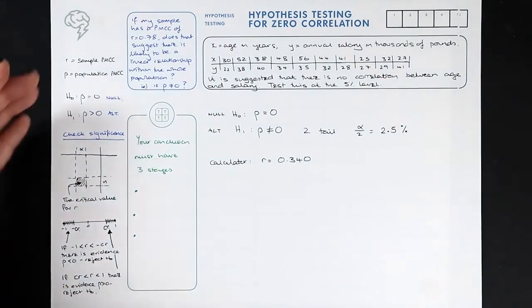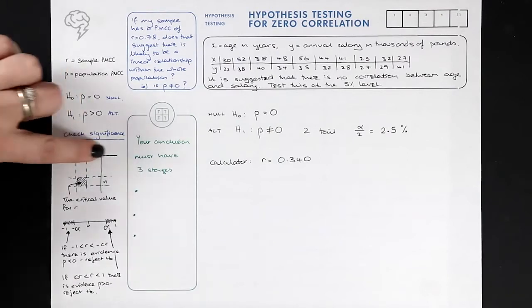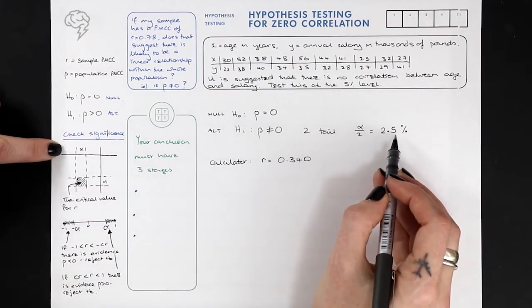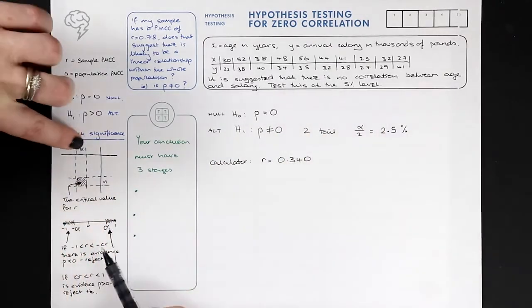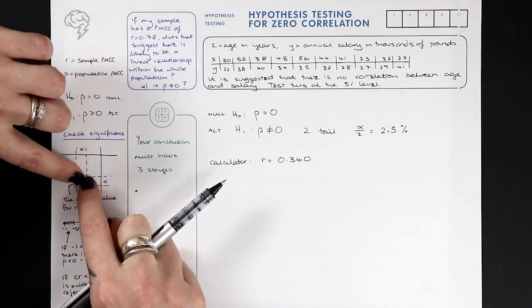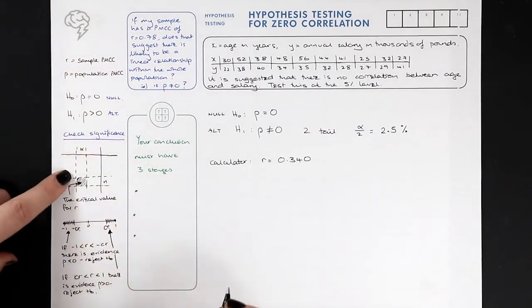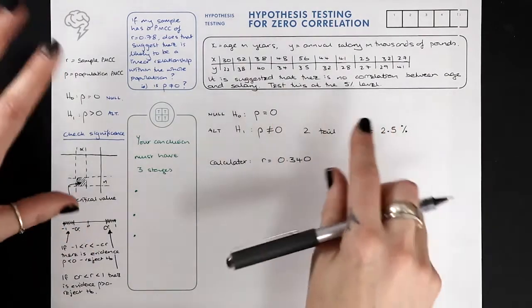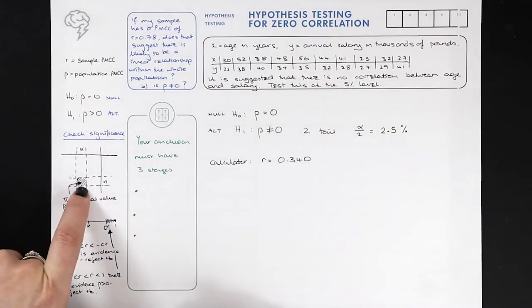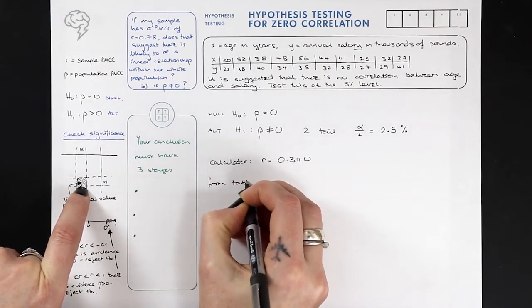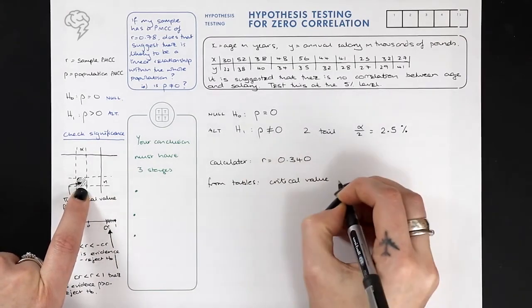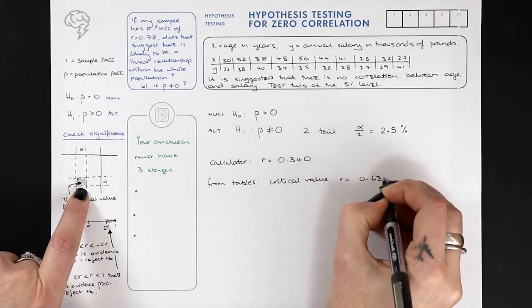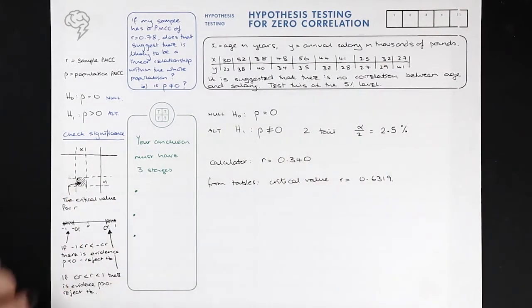You go to your table and across the top you'll see all the significance levels. We're looking for 0.025, and down the side are all the n values — that's your sample size. Here it's 10, so you'd go to 0.025 and n=10 and read across. I recommend using a ruler because otherwise you can go wrong with those tables, so be very careful when reading them off.